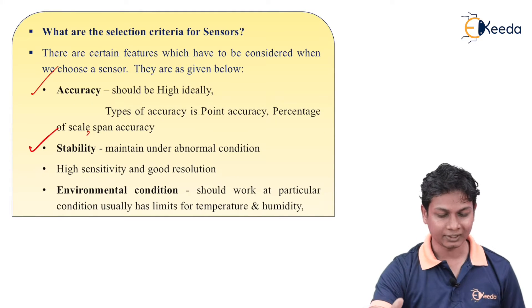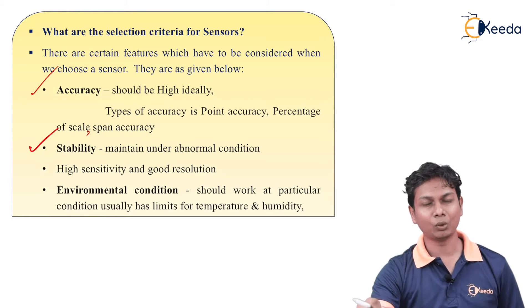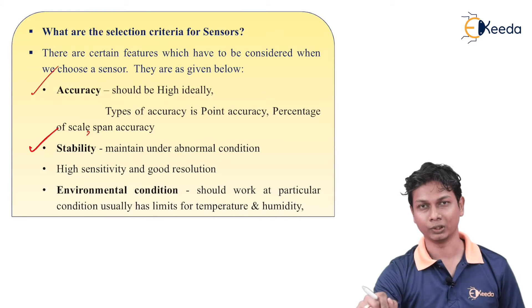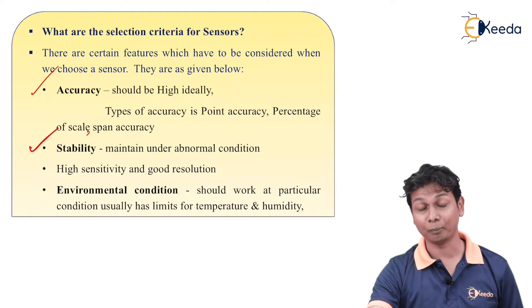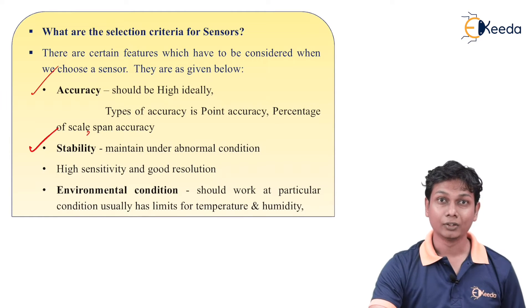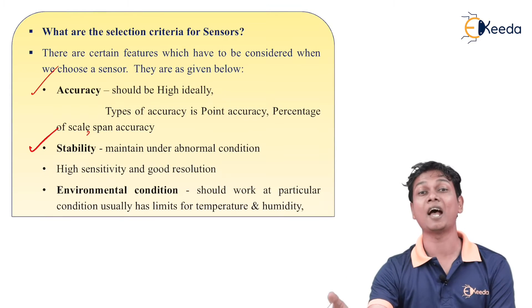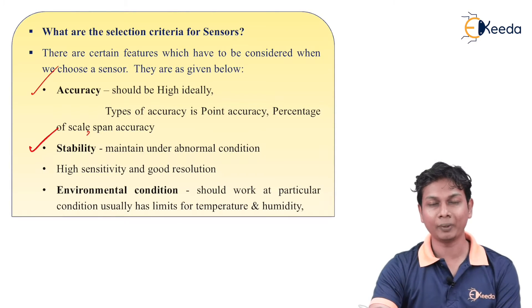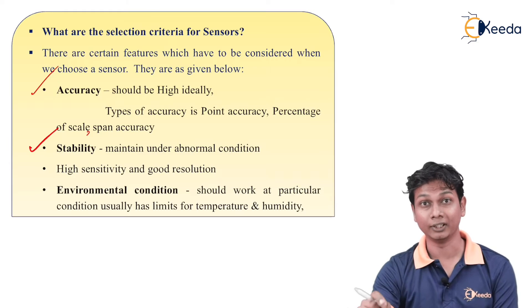The next part is high sensitivity and good resolution. The sensitivity of a particular sensor should always be high under any condition and give output at high resolution. The environmental condition can be affected by various physical parameters like light or humidity. If temperature or humidity increases, it can affect the sensitivity of a sensor. But ideally, in any environmental condition, the sensor should work at a particular specified condition.